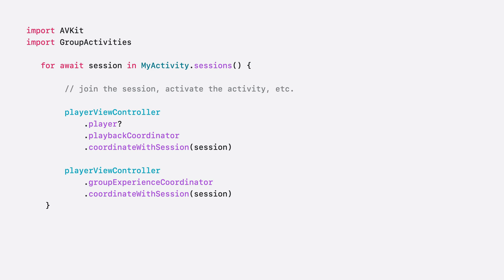To sync the viewing environment on the same session, first import both AVKit and group activities, and then pass the session to the AVPlayerViewController's AVGroupExperienceCoordinator. Now, when the activity participants watch full screen, they can share the same viewing environment.